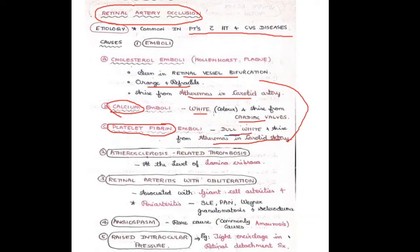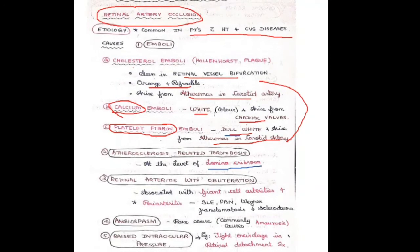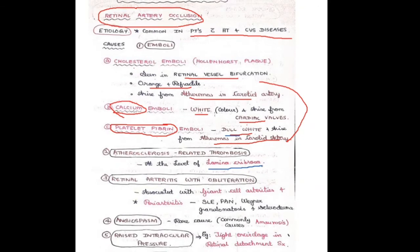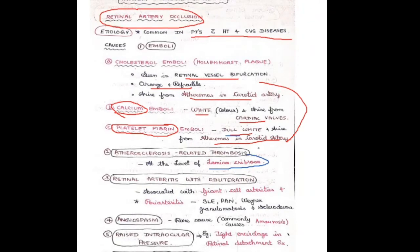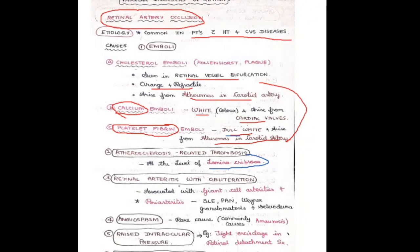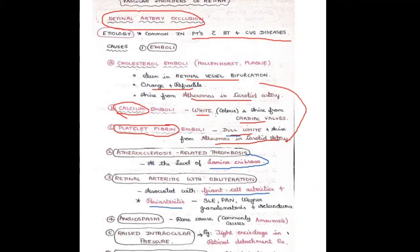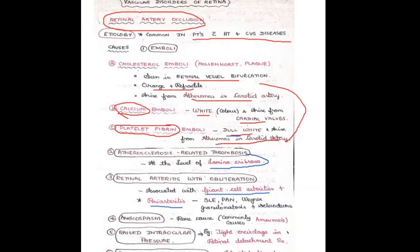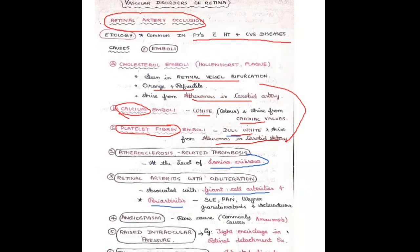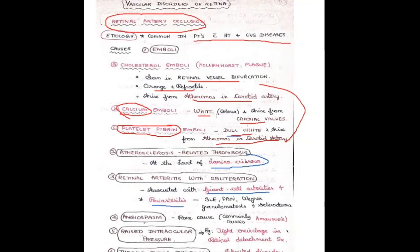Atherosclerosis-related thrombosis is another cause. Atherosclerosis occurs in all blood vessels from birth, and in the retinal vessels it is most prominent at the level of the lamina cribrosa, where the vessels and nerve enter and exit the orbit. Retinal arteritis is also a cause — this may be giant cell arteritis or peri-arteritis, which may be due to systemic lupus erythematosus, polyarteritis nodosa, Wegener's granulomatosis, or scleroderma.